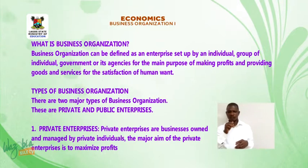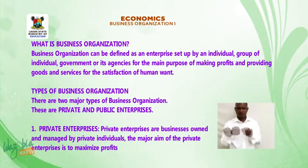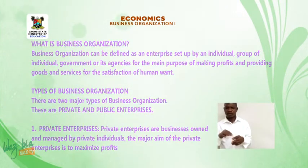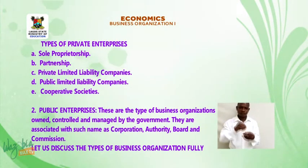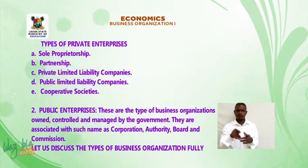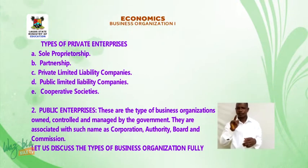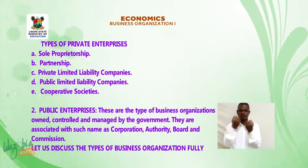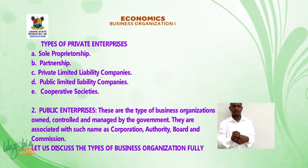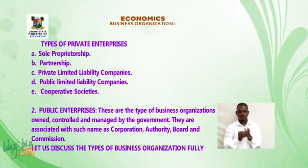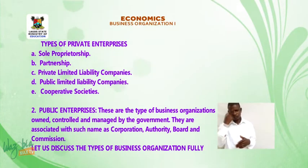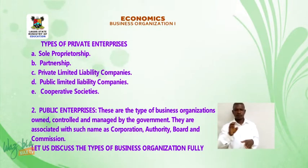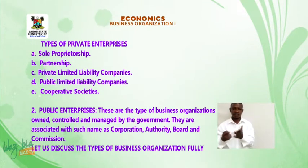Private enterprises are businesses owned and managed by private individuals. The major aim of private enterprises is to maximize profit. Types of private enterprises include: A. Sole proprietorship, B. Partnership, C. Private limited liability companies, D. Public limited liability companies, E. Cooperative societies. Public enterprises are the type of business organizations owned, controlled, and managed by the government. They are associated with such names as corporation, authority, board, and commission.